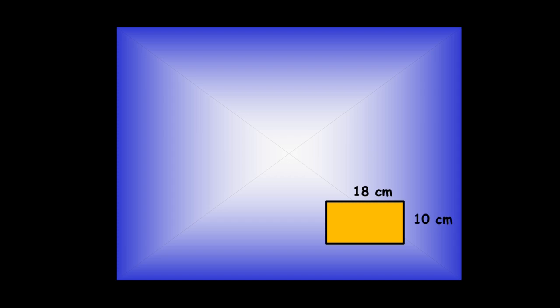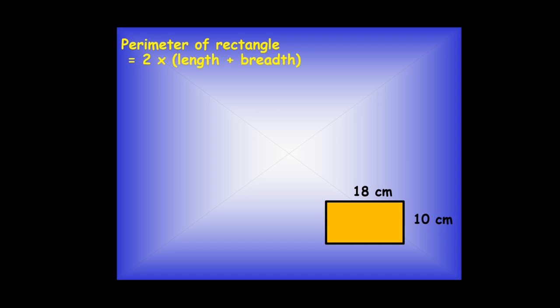Now let's talk about a rectangle. To find the perimeter of a rectangle, the formula is twice the product of the sum of its length and breadth.